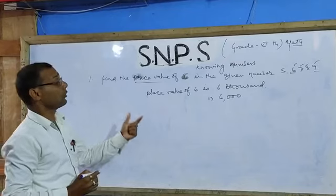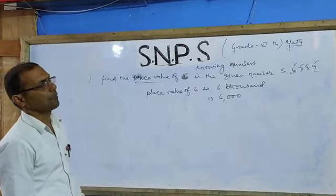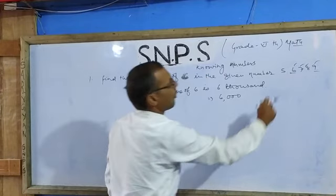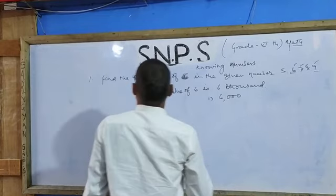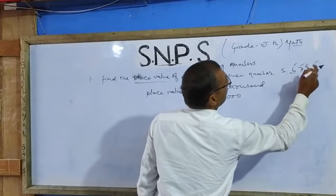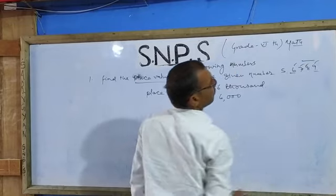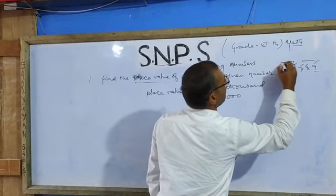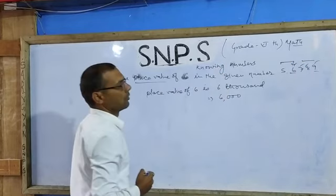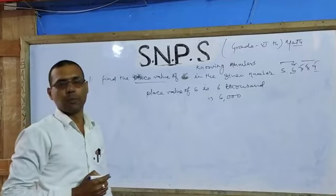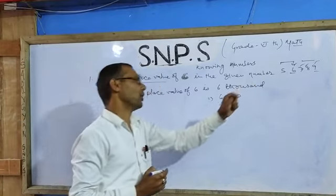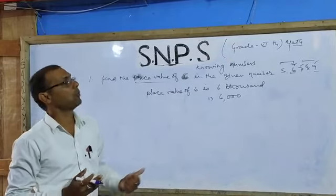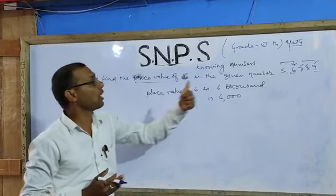Now you have to declare the period of the given number 6. What is the period of this number? You are looking here — in the first period, 'once' comes, and in the second period, 1000. So 6 is in the 1000 period. You have to give the answer of both the period and place of 6.